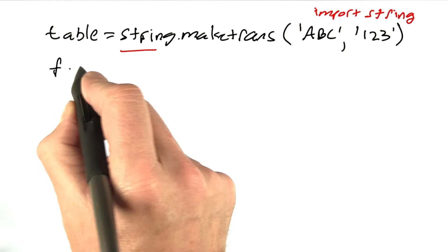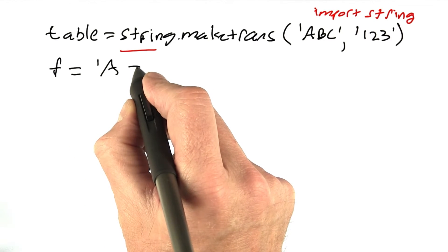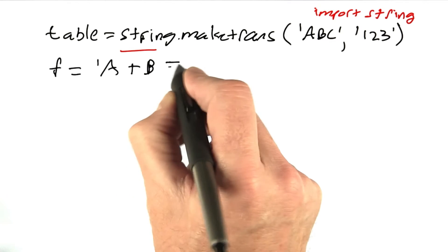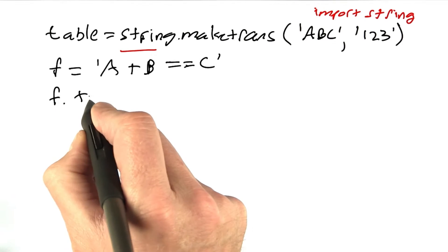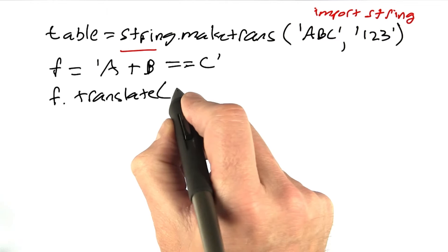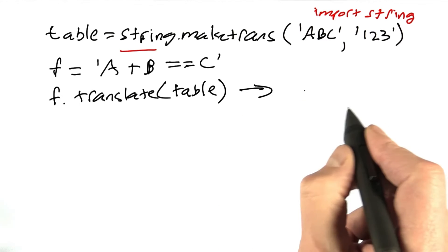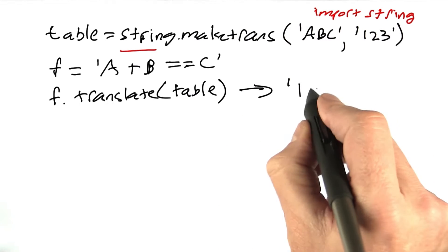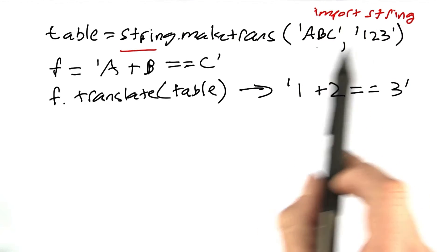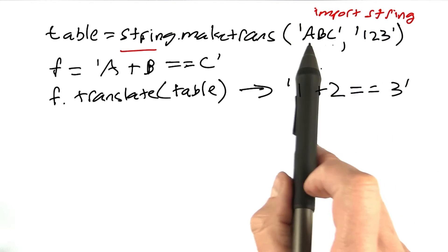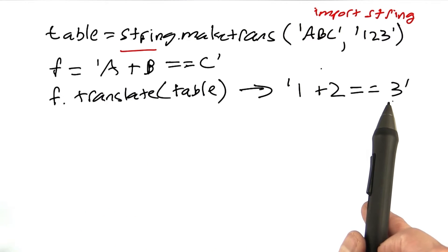Now I'm going to define a formula f to be simple formula a plus b equals c. And then I'm going to call the translate method of the formula f and pass it this translation table. And that will evaluate to the string 1 plus 2 equals 3. So it's taken each of the elements in the table and they correspond a to 1, b to 2, c to 3, substituted those into f and given me back a brand new string.